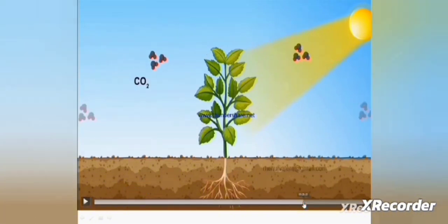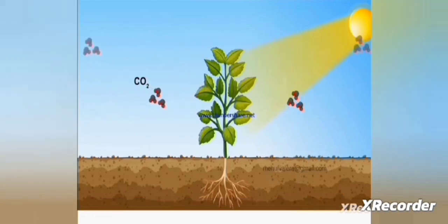So in this way, plants prepare their own food through the process of photosynthesis with the help of sunlight, water and minerals, and carbon dioxide.